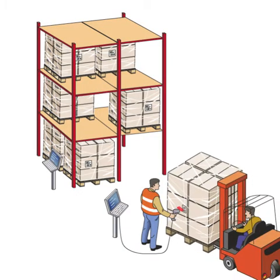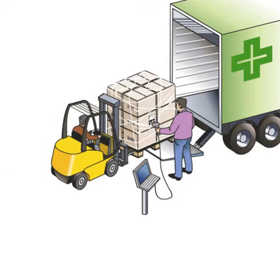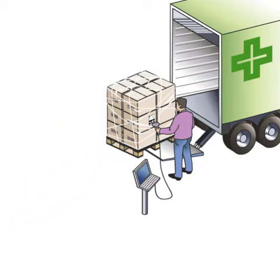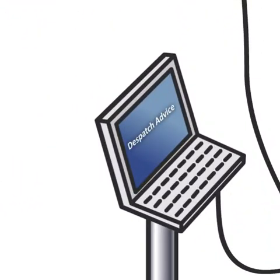The shipping units are deposited at the dispatching gate. While they are loaded on the truck, the warehouse operator scans barcodes on the pallets and cases. When loading is completed, the system generates a dispatch advice and sends it to the receiver of the delivery. It also generates transport instructions for the carrier.